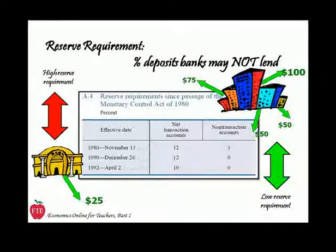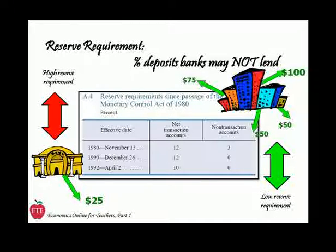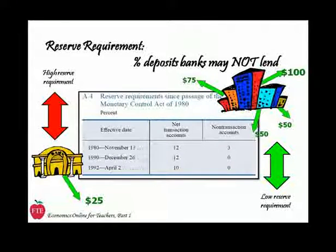Economists can calculate the potential expansion of the money supply fairly closely by knowing the reserve requirement and the amount of deposits. In theory, the Fed could change reserve requirements any time, but it doesn't. The reserve requirement tool is so powerful that sudden changes could have a devastating effect on the banking system and thus on the economy. If a bank had made all the loans for which it had reserves and then the Fed increased the reserve requirement, the bank's options would be to borrow from banks that have excess reserves, or to call in some loans — not calculated to earn the bank much favor with its customers. Consequently, the reserve requirement is rarely changed.